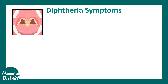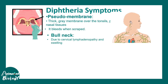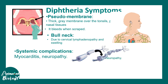Diphtheria has a pseudomembrane appearance — a thick gray membrane over the tonsil, pharynx, or nasal tissues — and when it is scraped it would bleed. There is also 'bull's neck,' where the neck gets swollen because the cervical lymph nodes are also swollen, causing cervical lymphadenopathy. Systemic complications include myocarditis and neuropathy.